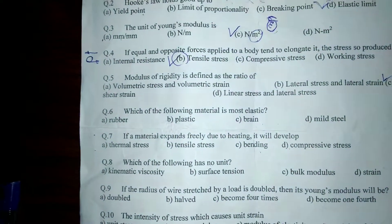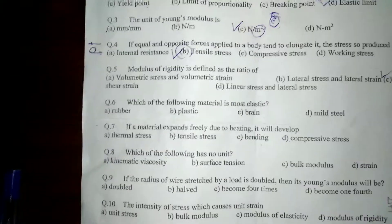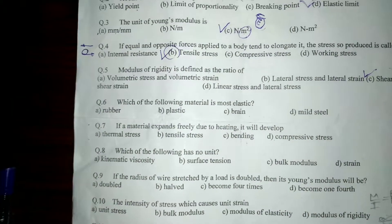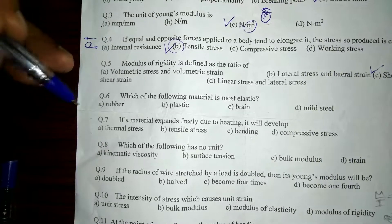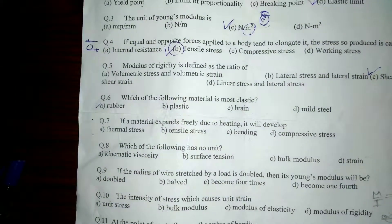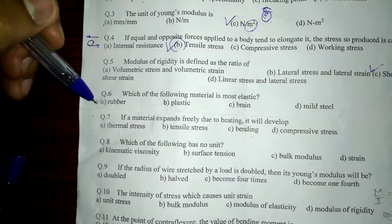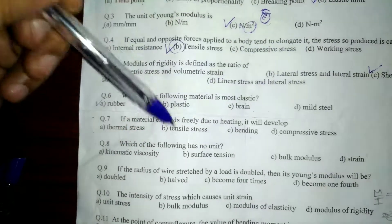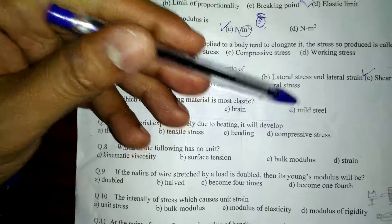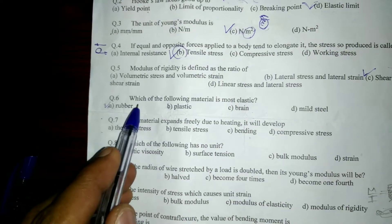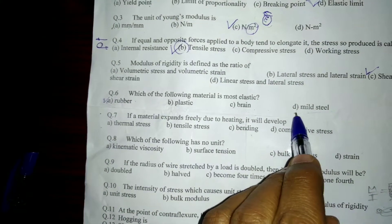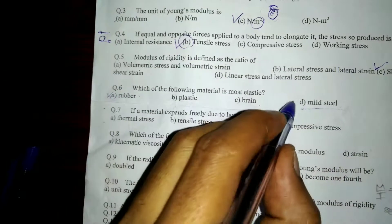The next question: which of the following materials is most elastic? The options are rubber, plastic, brass, and mild steel. People often confuse rubber and mild steel. Rubber has less elasticity than mild steel because rubber has certain limits—when exceeded, the material breaks. But mild steel has more elastic property, so the answer is mild steel.